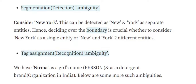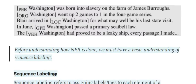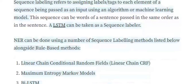The second ambiguity is tag assignment — when the same name can have different meanings. For example, 'Nirma' in India can be a girl's name as well as a famous washing brand. Similarly, 'Apple' can be the name of a fruit and also a tech organization. There are multiple approaches for named entity recognition: linear CRFs, maximum entropy Markov models, and others.